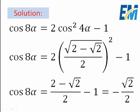We now compute cos(8α) = 2cos²(4α) − 1. Squaring cos(4α) cancels the outer square root, giving (2 − √2) / 4. Multiplying by 2 gives (2 − √2) / 2. Then subtracting 1, written as 2/2, gives 1 − 1 which cancels, and we finally obtain cos(8α) = −√2 / 2. We are familiar with this value.